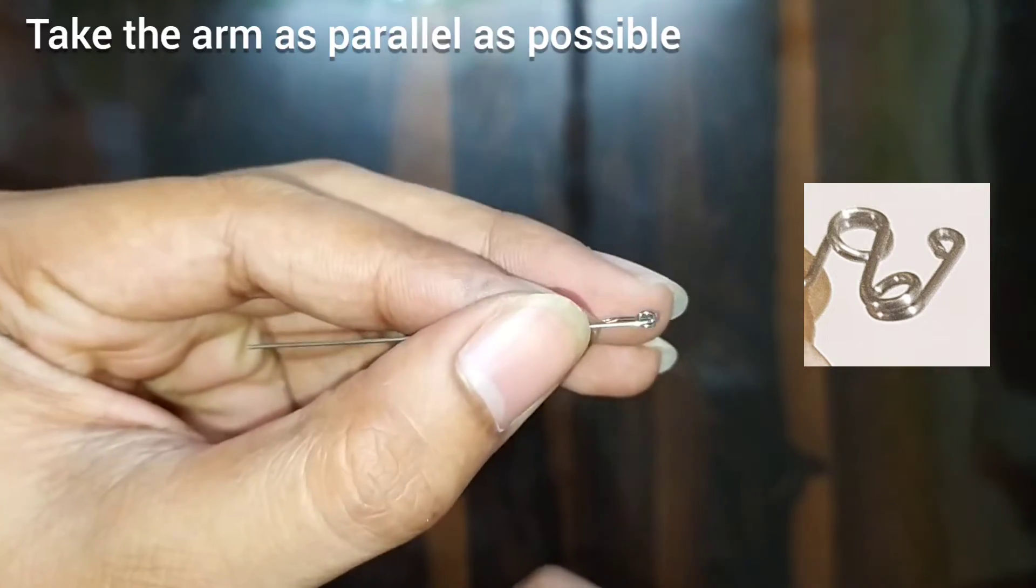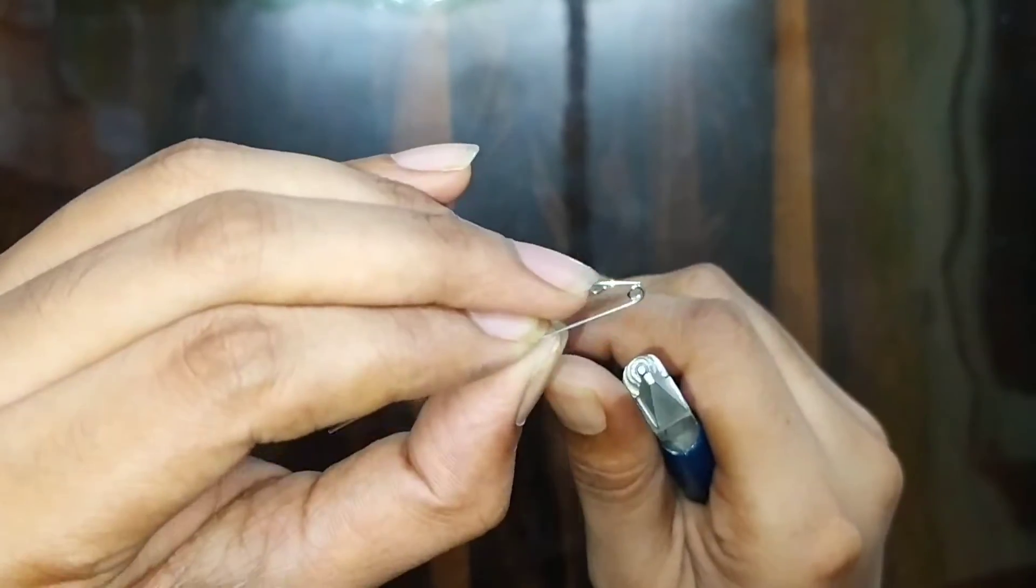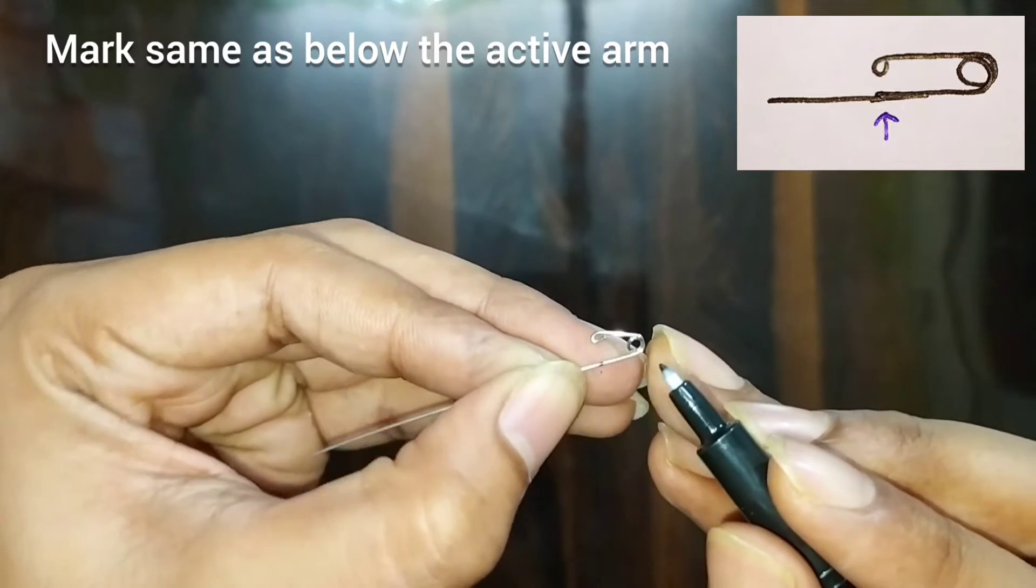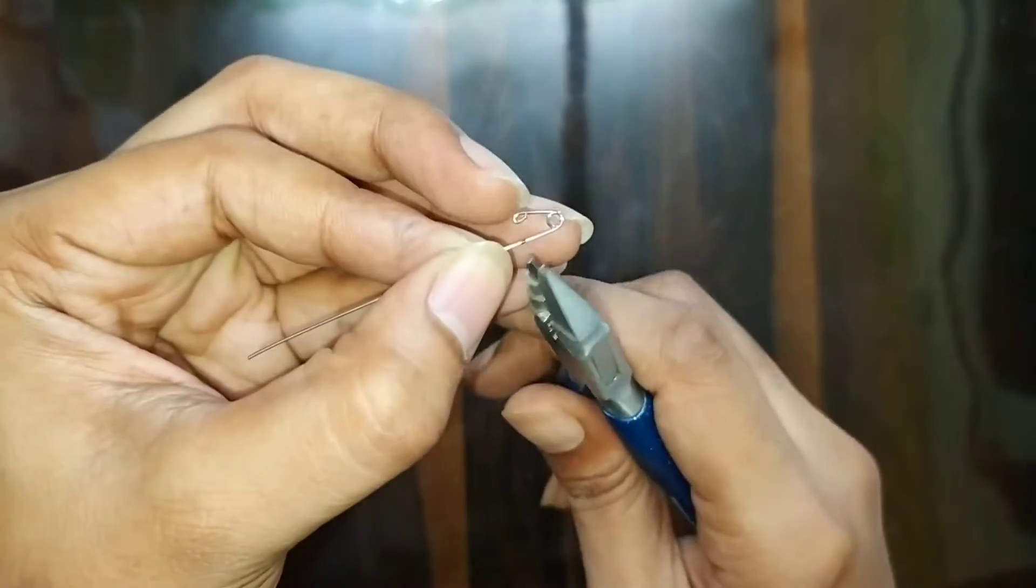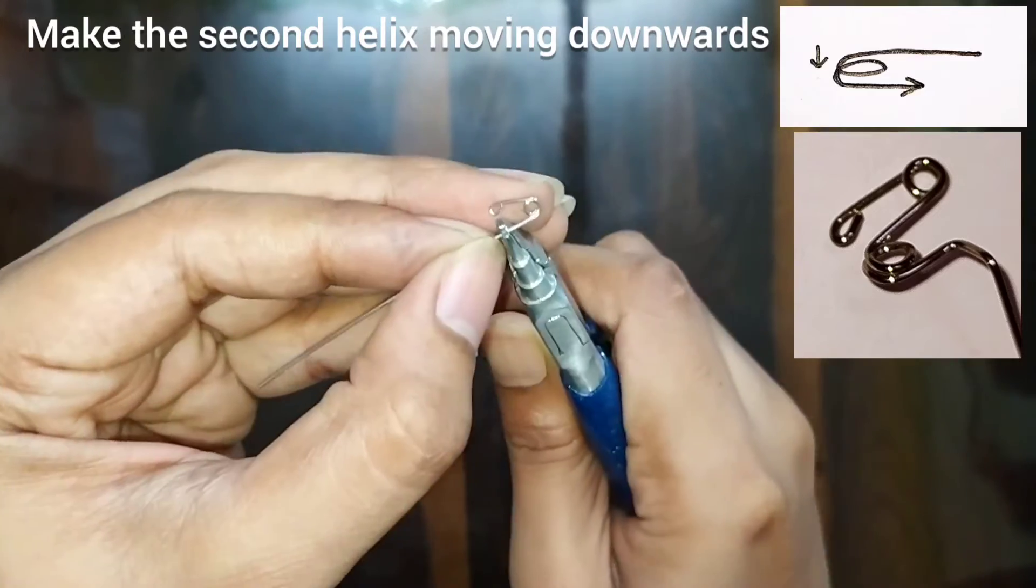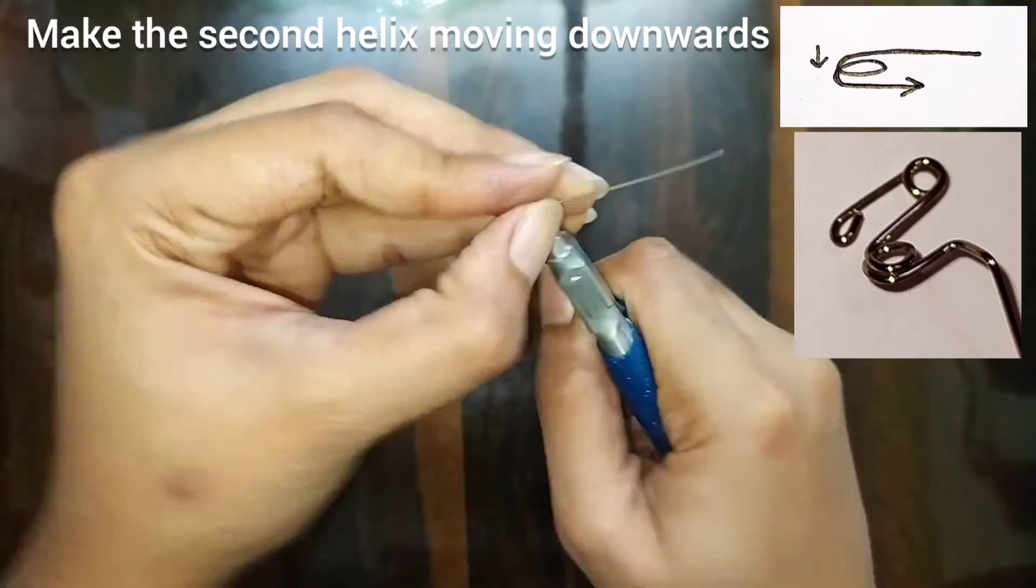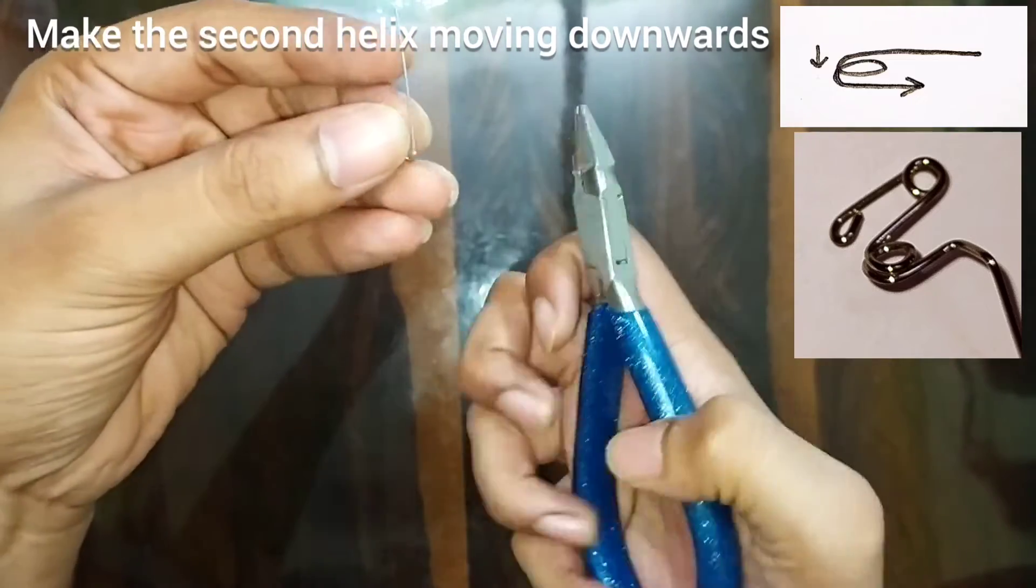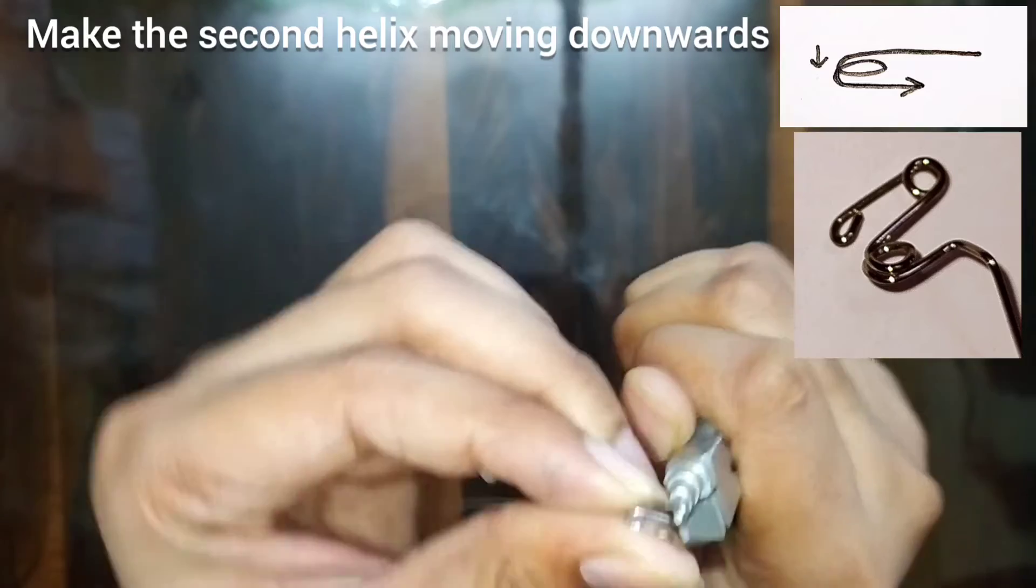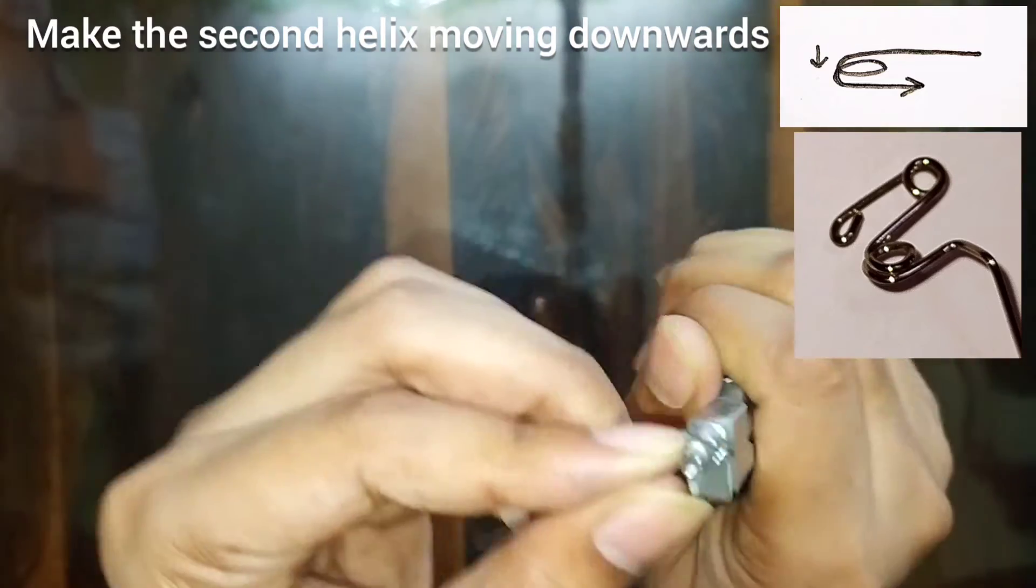In this way it should look. Again we will do the marking exactly below the tag for the second helix. This time the turn should be downwards, below the active arm. You can see in the figure. Hold the wire at the tip of the plier and try to give as small as possible the helix.